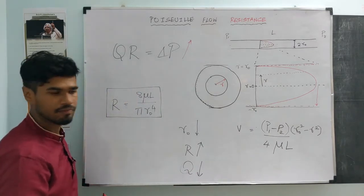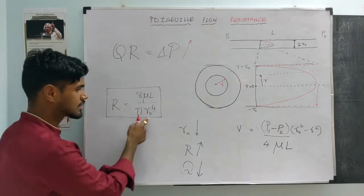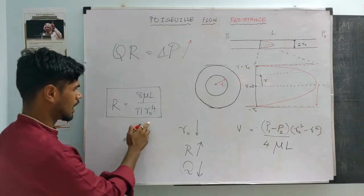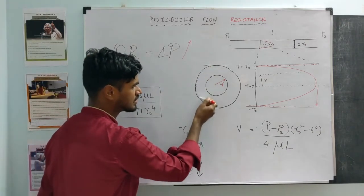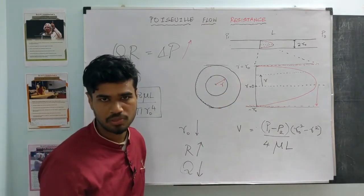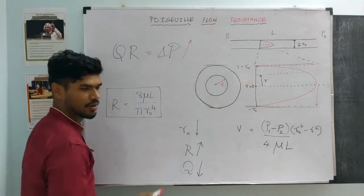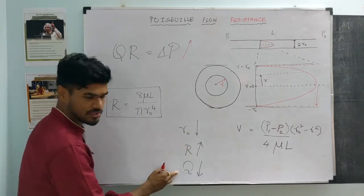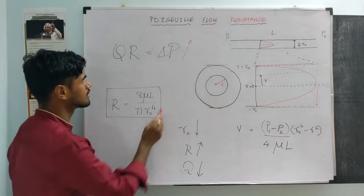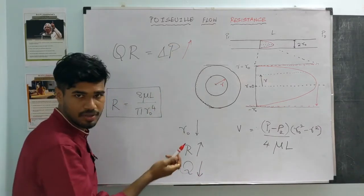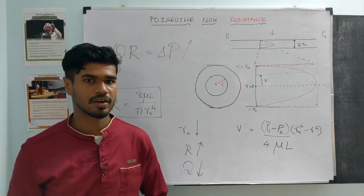To summarize: we quantified the resistance to flow in a blood vessel and found that resistance is inversely proportional to radius to the power 4. Because of this power 4 relationship, even minor changes in radius — say due to fat deposition — drastically increase the resistance. Once resistance increases, all different parts of the body need to receive the same amount of flow, so the pressure gradient drives up, resulting in diseases like hypertension.